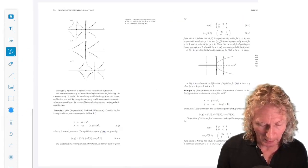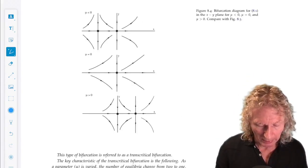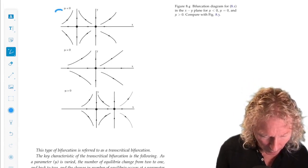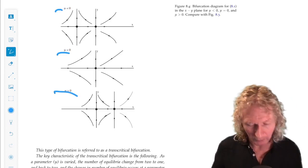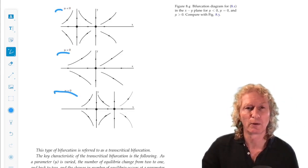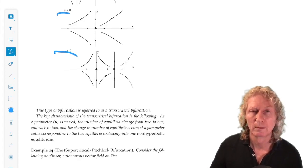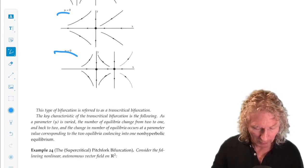And then we can plot these in the two-dimensional phase space for representative values of mu less than 0, mu equals 0, and mu greater than 0. That is a good exercise to verify these phase portraits for the three values of mu.